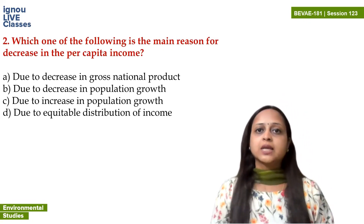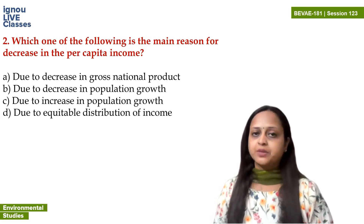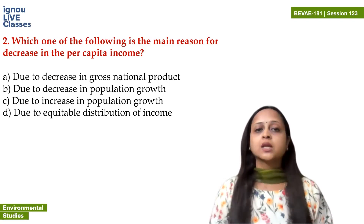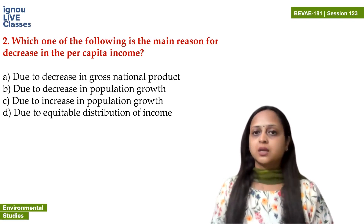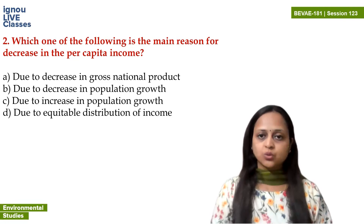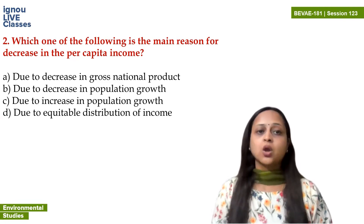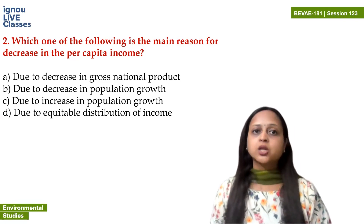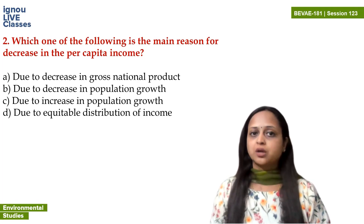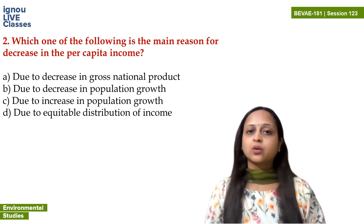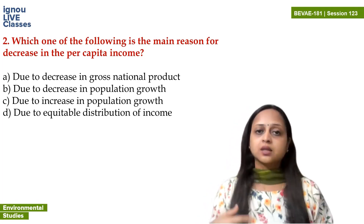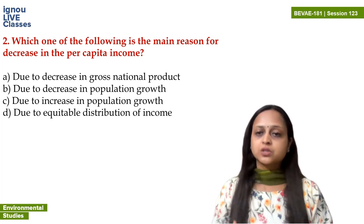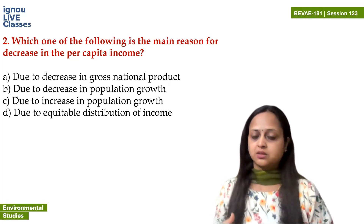Which one of the following is the main reason for decrease in per capita income? What is the main reason for per capita income? The main reason is due to decrease in gross national product. Gross national product is the services or goods produced by individuals or businesses.